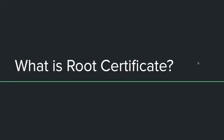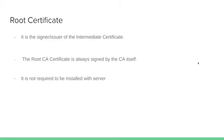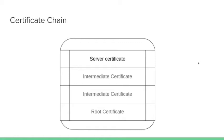The root certificate is the signer or the issuer of the intermediate certificate. The root certificate is always signed by the certificate authority itself. It's not required to be installed with the server because it will be packed with your browser. To summarize: your certificate chain has the server certificate, which is issued by the intermediate certificate. If you have multiple intermediate certificates they follow in order, each issued by the next, and at the end of the file you'll see the root certificate — but it's not required to be installed since it's already packed with your browser.